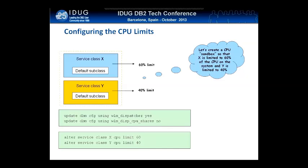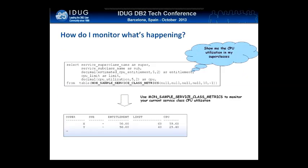So we're going to give a greater proportion of the box to service class X and a slightly smaller proportion to service class Y. And that's pretty much it. Once you've done this, your applications will run within the configured limits.